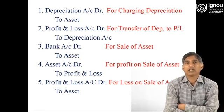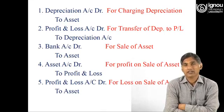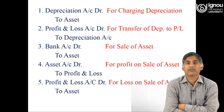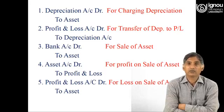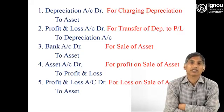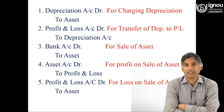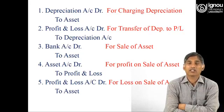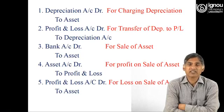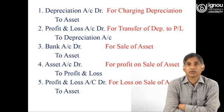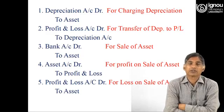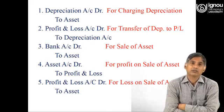For profit or loss on sale of the asset: when the asset is sold it is either sold at a profit or at a loss. If profit has been earned on the sale, that profit is transferred to the profit and loss account, so the entry would be: Asset Account debit to Profit and Loss. If a loss has taken place on account of sale of the asset, the reverse entry is recorded: Profit and Loss Account debit to Asset. This is how journal entries are recorded under this method.